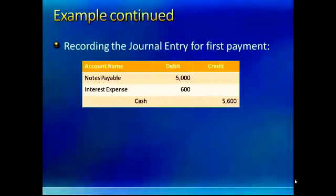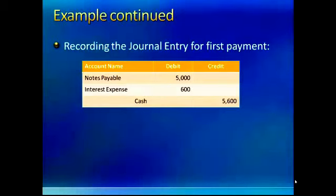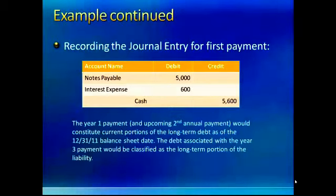The journal entry for the first payment would be a $5,600 credit to cash — $5,000 to satisfy one-third of the note payable, plus $600 for the current period interest expense. Looking out into the future, there are two more $5,000 principal payments and two more $600 interest payments to be made. The payment due next year is considered a current obligation since it's due within a year. But the final year's $5,000 payment and $600 interest payment — due two years out — represents a long-term liability.